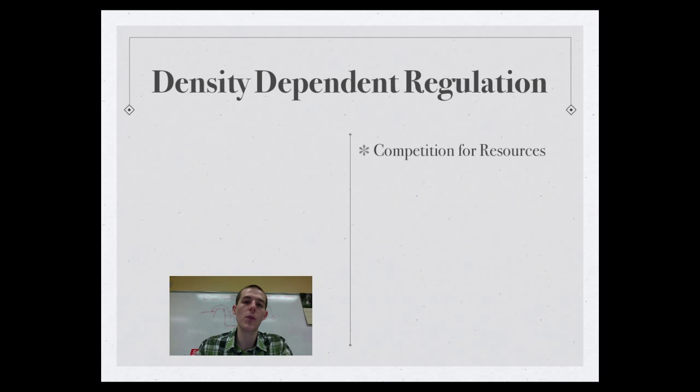And some of the factors that work in density-dependent regulation are as follows. You've got competition for resources. So if you've got more organisms living in an area, obviously there's going to be greater competition for the same amount of resources, which means the environment will eventually be able to support fewer animals and lower your population. Predation. Predators have got a lot better chance of catching prey when there's a lot of prey around. So more prey equals greater predation, lowers the population size.